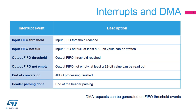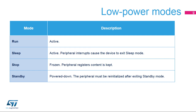The JPEG Codec has six interrupt sources. Input FIFO threshold and input FIFO not full flags are used to manage the input FIFO, either by the CPU or DMA. Output FIFO threshold and output FIFO not empty flags are used to manage the output FIFO, either by the CPU or DMA. End of conversion flag indicates the end of the JPEG process. Header parsing done flag indicates the end of the header parsing operation. The JPEG Codec is active in run and sleep modes.